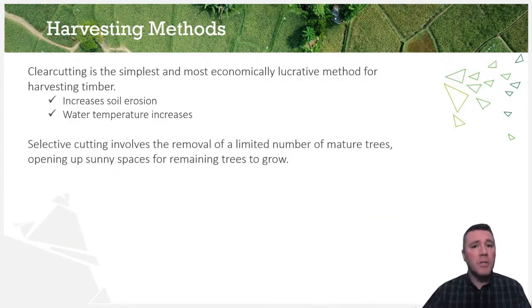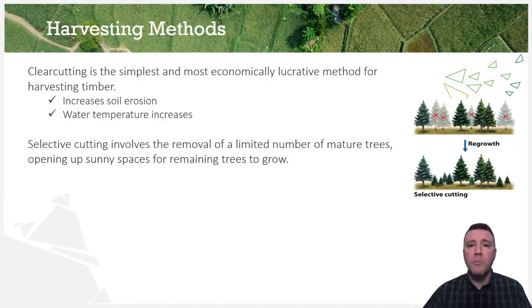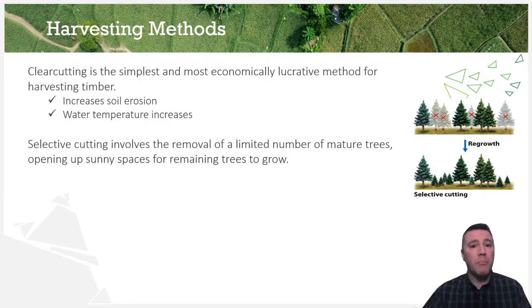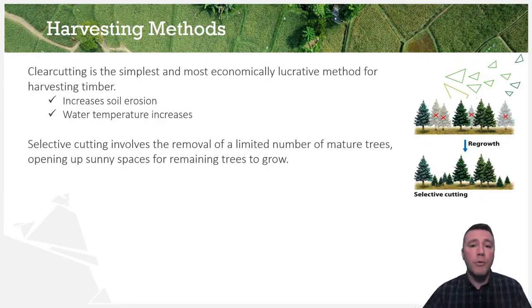Selective cutting, which is more time-intensive and expensive, involves the removal of a small number of fully grown trees. Although the economic gain from this method of harvesting is significantly less than clear-cutting, and may not meet the market's need for building materials, it does allow for more light to reach the ground, promoting the growth of newer and smaller trees, and largely avoids the negative consequences of clear-cutting.